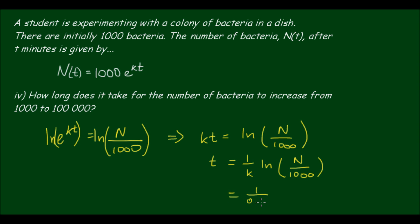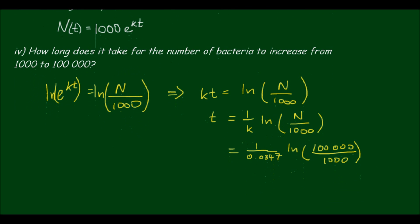And so substituting in our values, 1 divided by 0.0347, ln of 100,000 divided by 1000. And this gives us, I can simplify 100,000 divided by 1000 to ln of 100. And so plugging these values into a calculator gives us about 133 minutes. So it takes a little over 3 hours to increase the number of bacteria by a factor of 100 in our experimental dish.